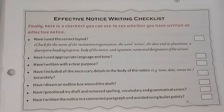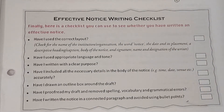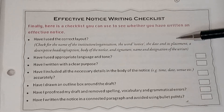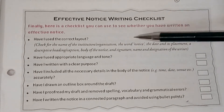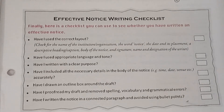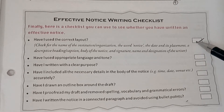Then comes the effective notice writing checklist. You have to check whether your notice is correct or not. The very first thing: have I used the correct layout? — all the nine things I just taught you. Have I done all those things — like putting 'NOTICE', then date and its placement, heading, caption, body of the notice, signature, name, designation — all the things. Have I written them? If you have written, then tick it. Do this self-assessment after every notice you write, so that you will never lose any mark.